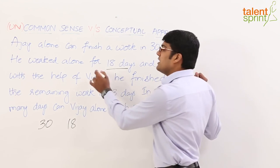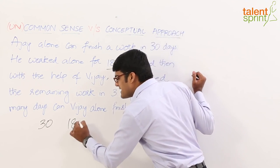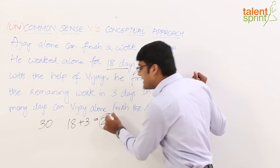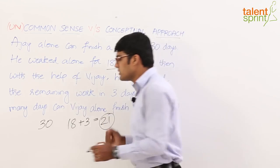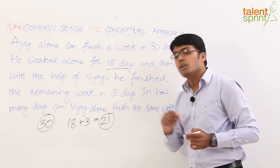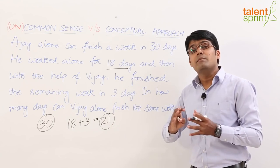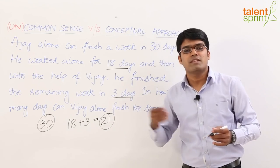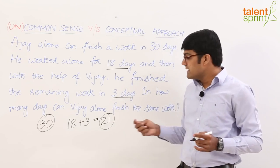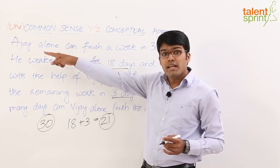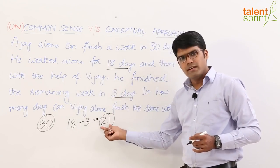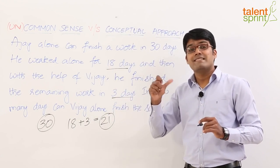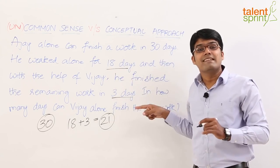Now if you look at the overall question: initially Ajay worked alone for 18 days and then he worked again for 3 more days, which means altogether Ajay has worked for 21 days. It totally takes 30 days for him to finish the work. He has worked only for 21 days, and the remaining work was finished by Vijay in 3 days. The remaining work can be finished by Ajay in 9 days, since he worked 21 days out of 30.